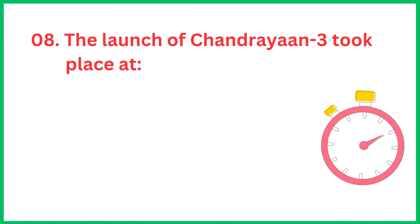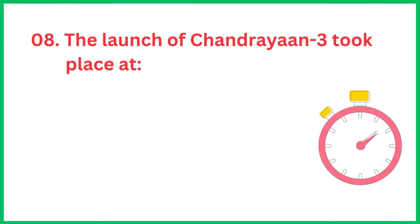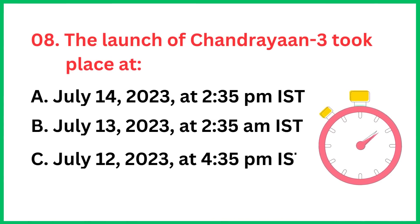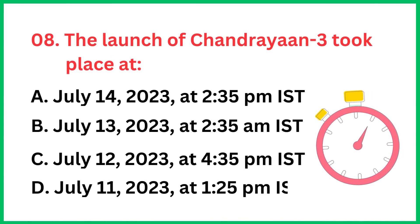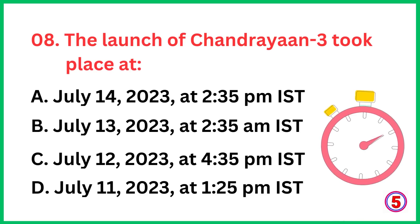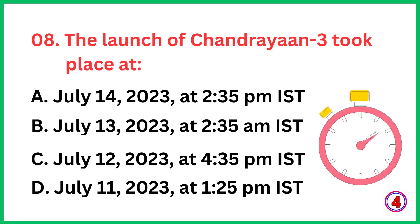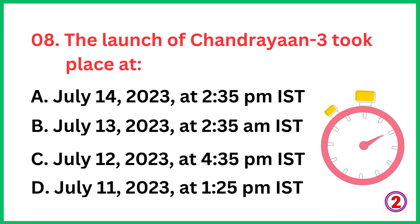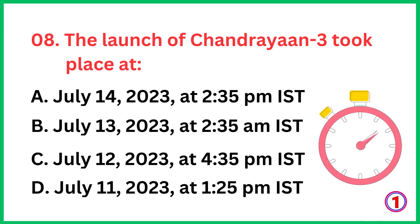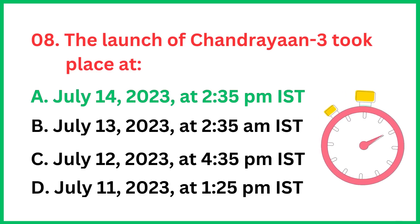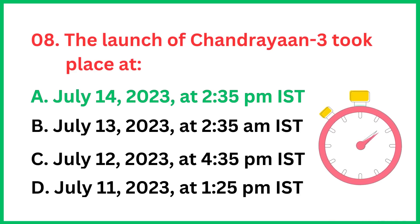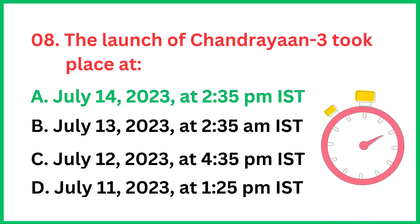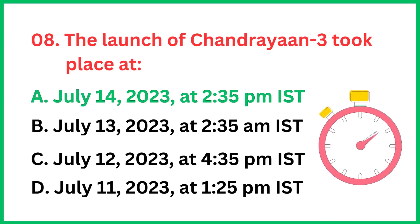The launch of Chandrayaan-3 took place at? The correct answer is option A, July 14, 2023 at 2:35 PM IST.